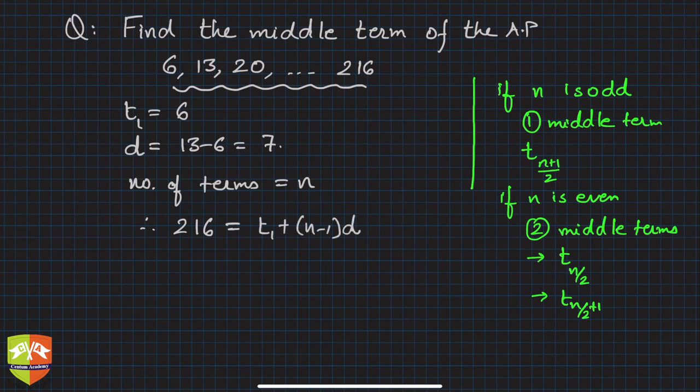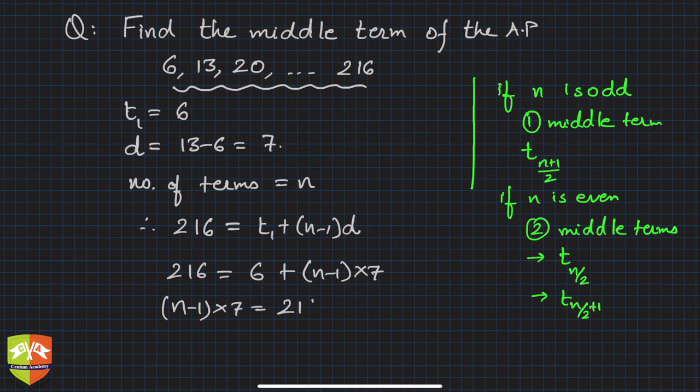So 216 = 6 + (n-1) × 7. This means (n-1) × 7 = 216 - 6. So (n-1) = 210/7 = 30, which implies n = 31.